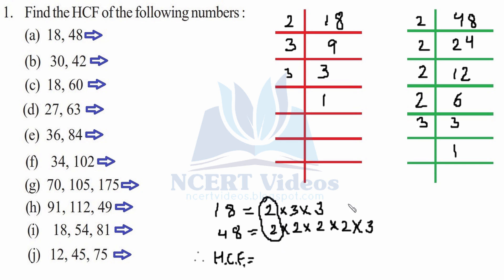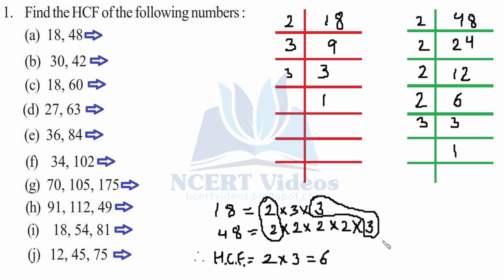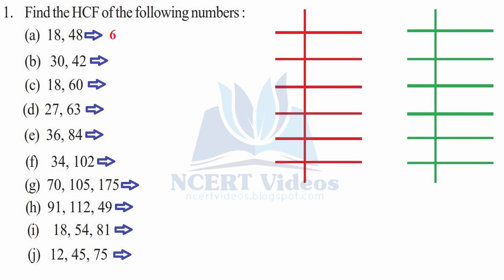The common factors amongst them are 2 and 3. So the HCF would be the product of common factors: 2×3 = 6. Six is the HCF for part a.